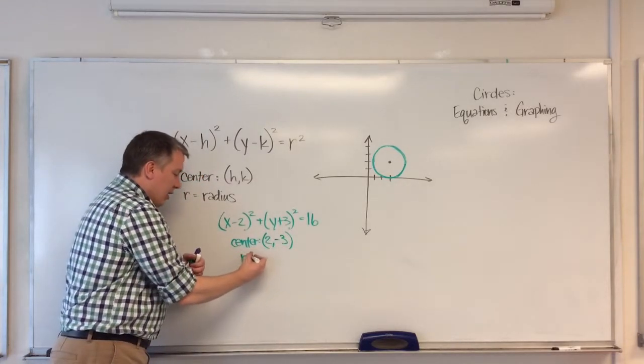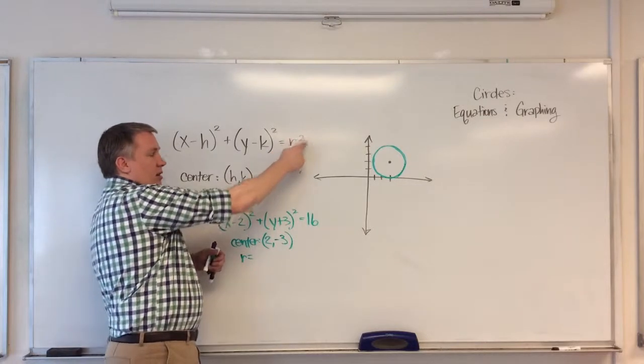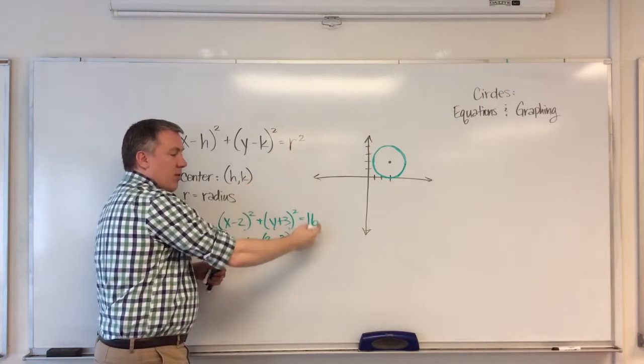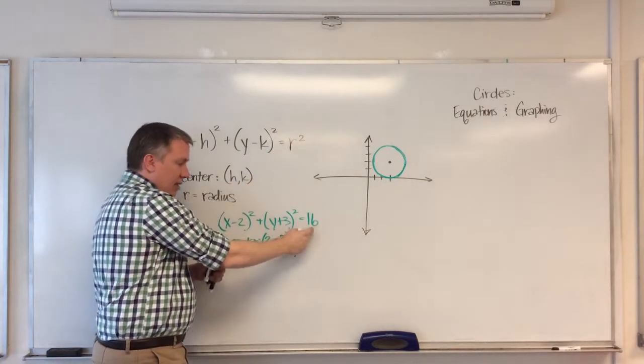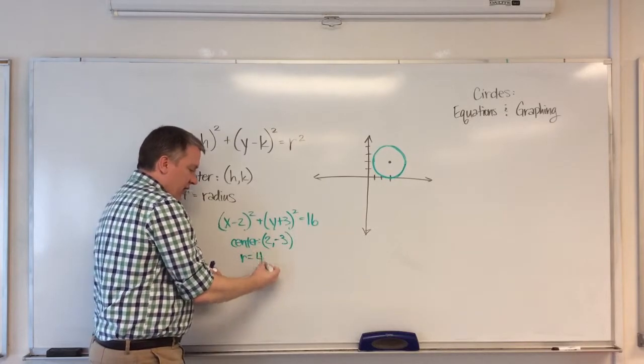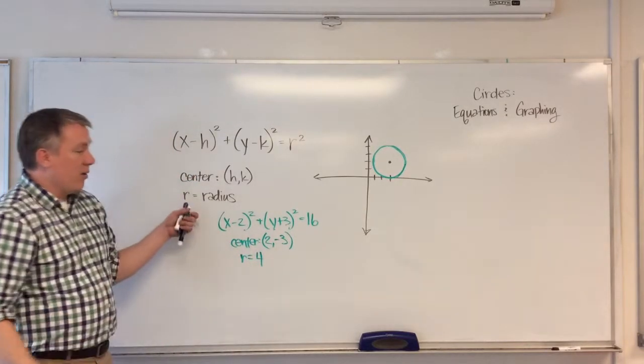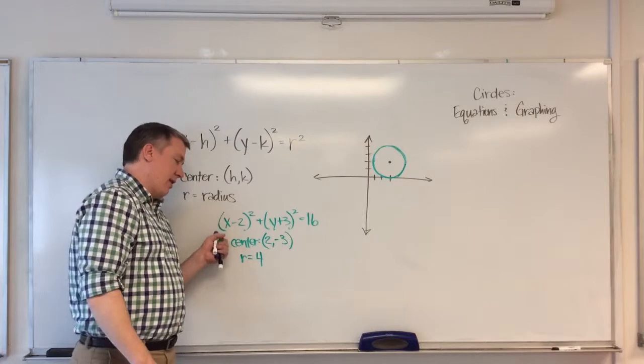And my radius is, since this is r squared, we would take the square root to find the radius. The square root of 16 is 4. So that's how you would go from a formula to find the center and radius.